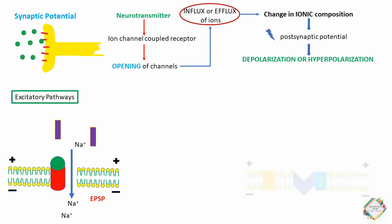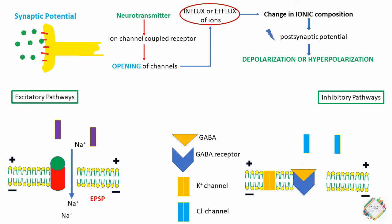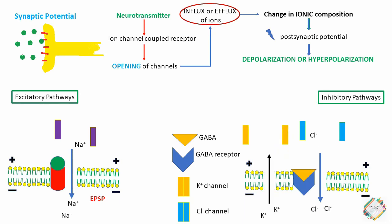When talking about inhibitory pathways, stimulation of inhibitory neurons causes movement of ions that results in hyperpolarization of the post-synaptic membrane. When there is no agonist acting on the receptor, channels such as the chloride channel remain closed and no potential changes occur. Stimulation of inhibitory neurons releases neurotransmitters such as GABA or glycine, which bind to respective receptors on the post-synaptic cell membrane. This causes a transient increase in the permeability of potassium or chloride ions, and the influx of chloride and efflux of potassium causes a weak hyperpolarization.